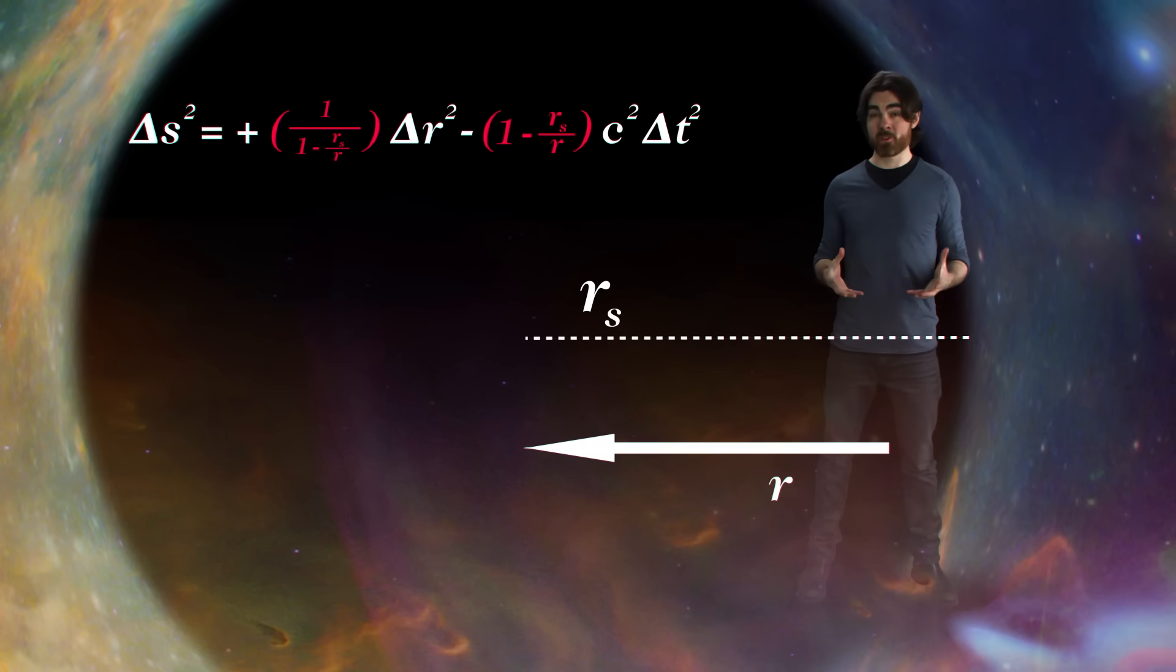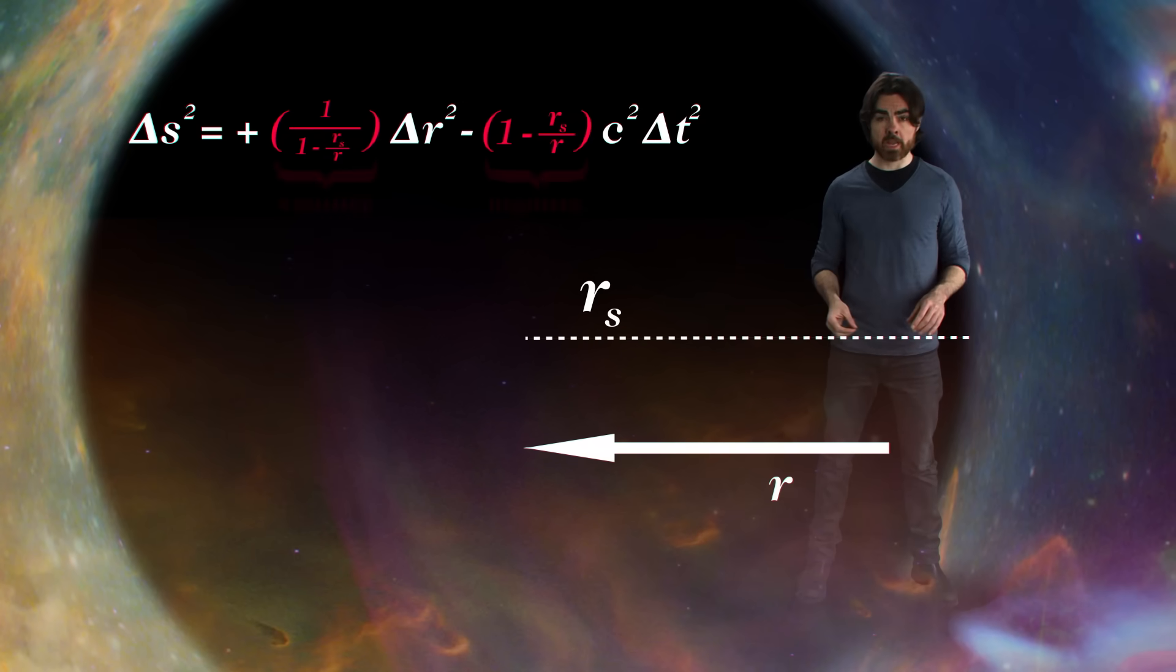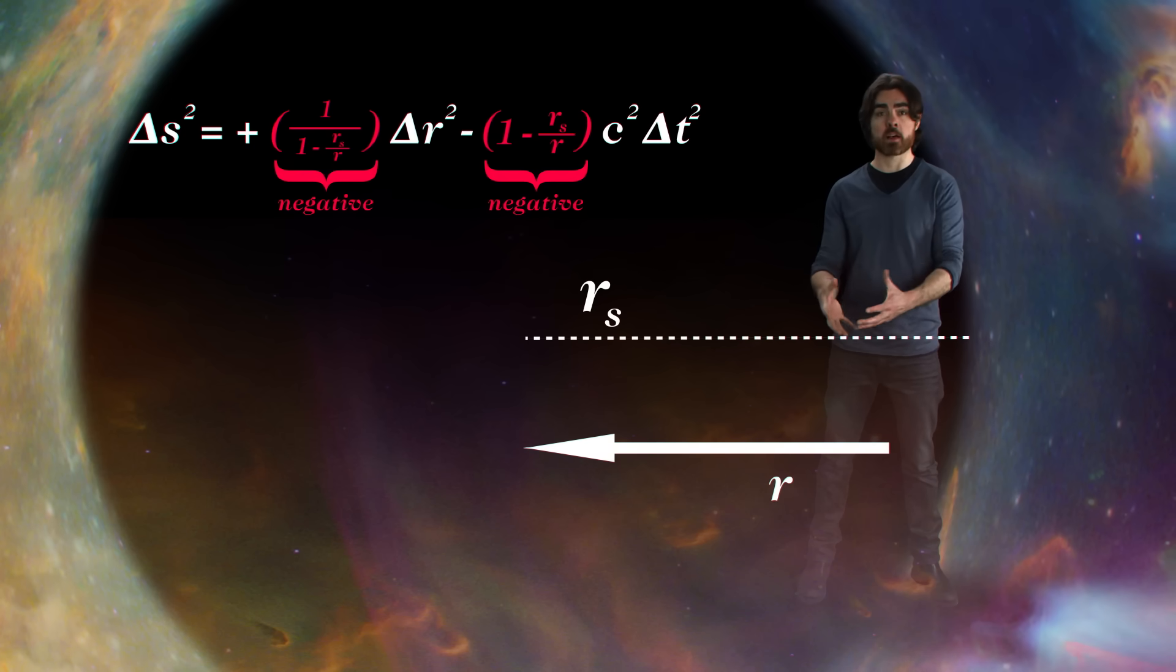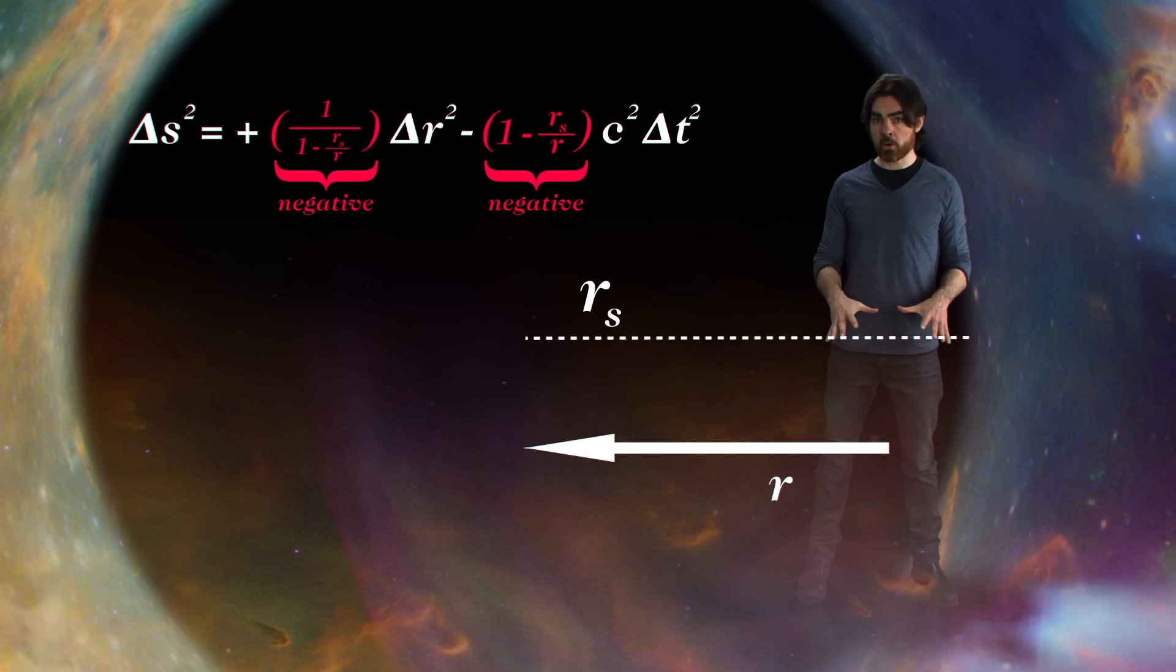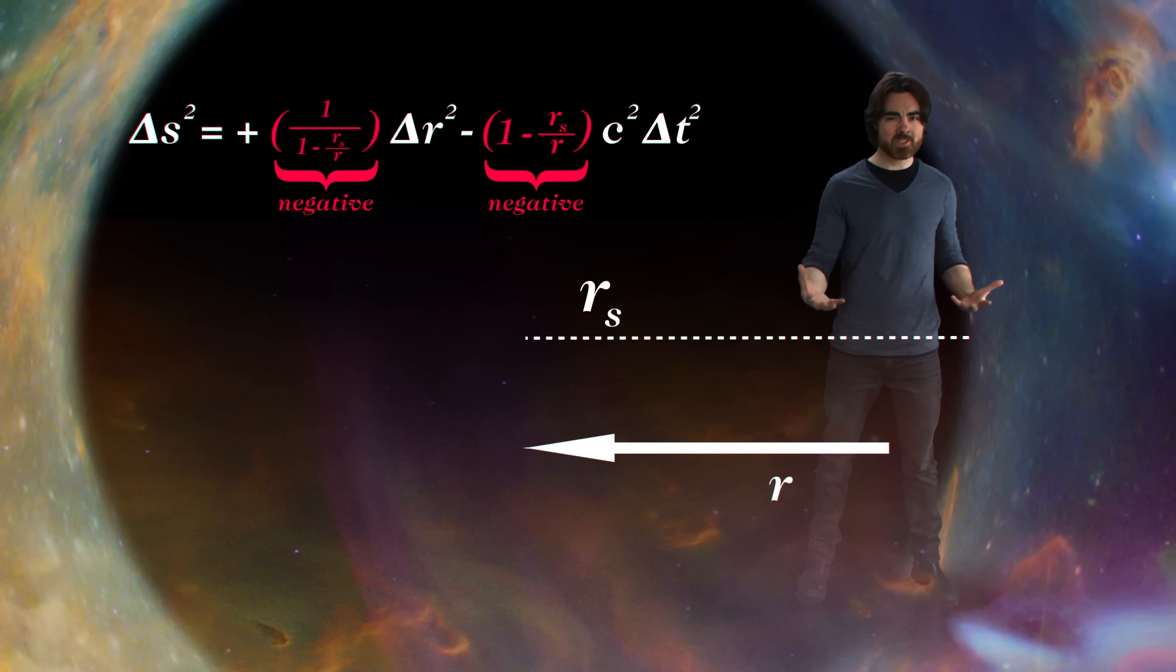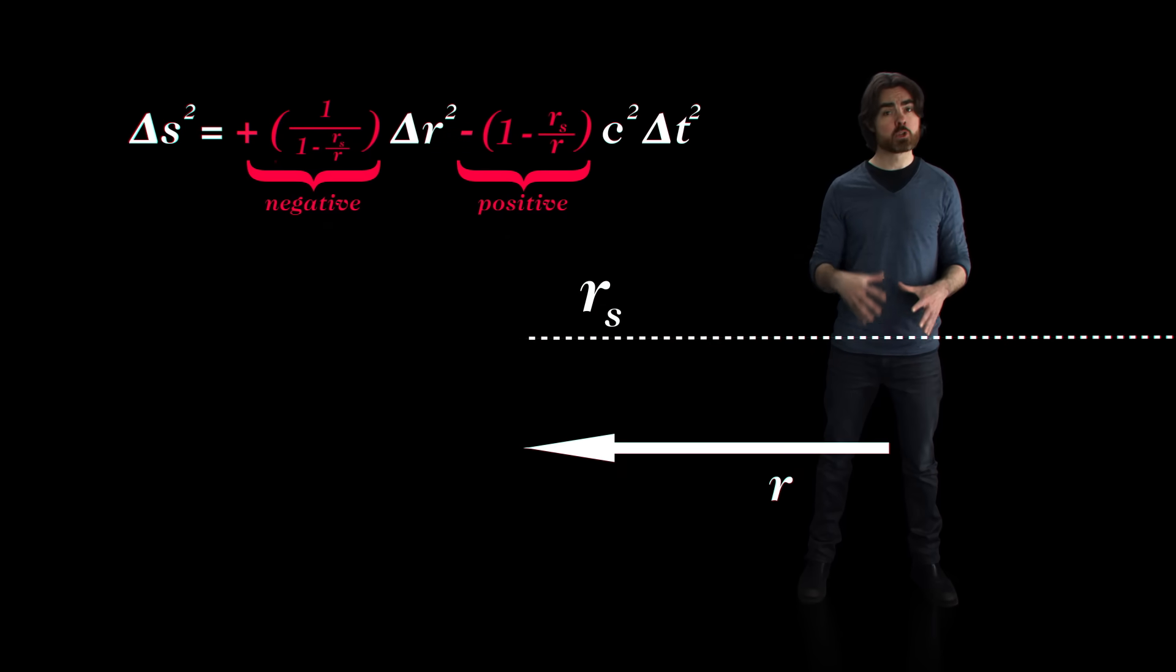Things change radically below the event horizon when r gets smaller than rs. Then both of these brackets become negative. The entire delta r stuff is now negative, and the delta t stuff is positive. Below the event horizon, there is only one way to maintain the respectable causal progression expected of a well-mannered temporal entity, that's to fall inwards, to have a non-zero delta r. As it happens, you don't have a choice. Space itself is falling inwards faster than the speed of light towards the central singularity. It carries you with it and drives your personal clock forward as it does so.